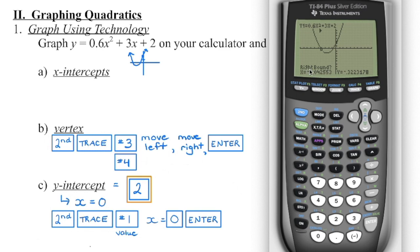Then the calculator says, are we on the right side — are we right bound? So if this is the vertex, I'm going to hit the right arrow and move over so that we're on the right side but close to the vertex, and press enter again. Now the calculator says, do you want me to guess? You can see little arrowheads indicating the range where the calculator is going to be guessing — that is where the vertex lies. So I'm going to press enter to say yes, that's where we want you to guess.